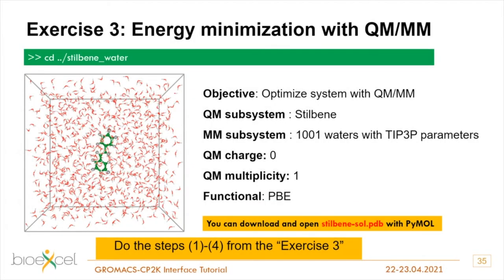In general, with GROMACS-CP2K you can use standard MDP files and just add the CP2K interface parameters. Make sure that output options like nstout are set to a proper value, because in classical simulations output is often set to every 10,000 steps, which will never happen in QM/MM. It's always better to reduce these values. If you can run with the same setup, you can easily switch to QM/MM using just the parameters shown in the CP2K description.